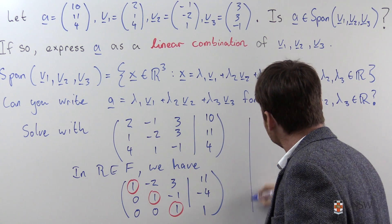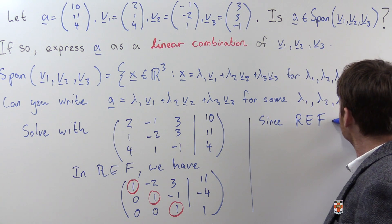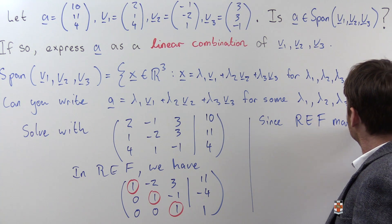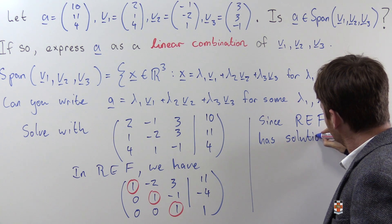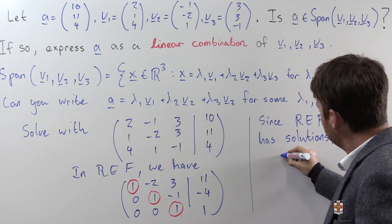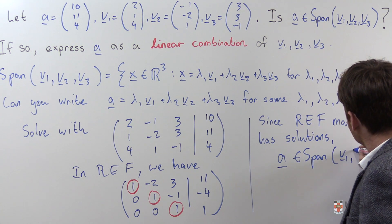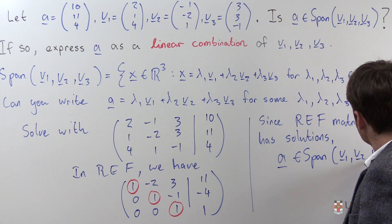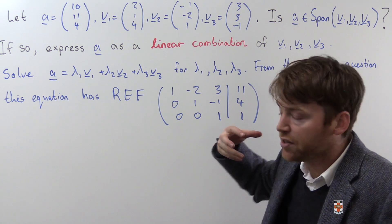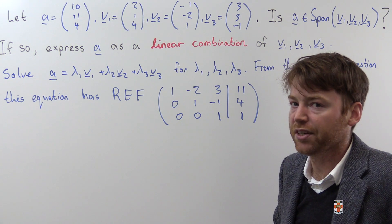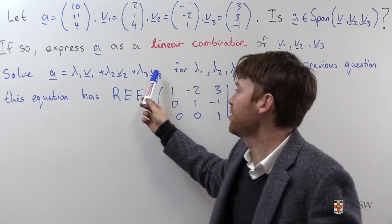So we might say since row echelon form matrix has solutions, then A is in the span of v1, v2 and v3. For the second part of this question, we're asked to explicitly express A as a linear combination of the vectors v1, v2 and v3. That is to say, solve this equation.